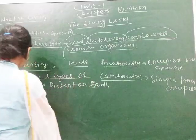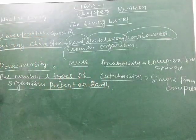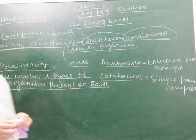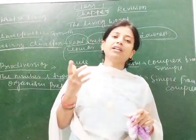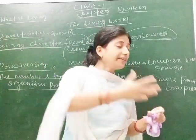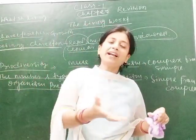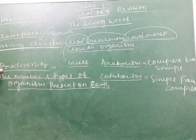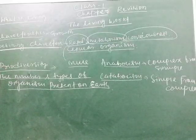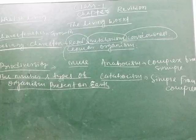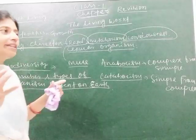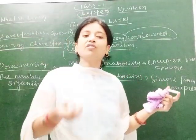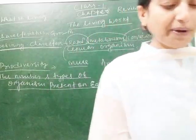On our earth various types of organisms are present, starting from unicellular to multicellular. Each different kind of organism represents a species — this is bird species, this is animal species, this is human species, this is plant species. So each particular organism is considered as a species when we study about biodiversity. Due to biodiversity we are able to know whether it is an animal, plant, mammal, bird, fish, or amphibian.